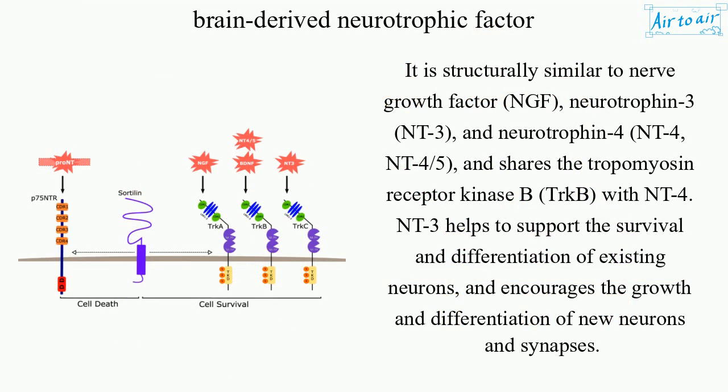It is structurally similar to nerve growth factor (NGF), Neurotrophin-3 (NT3), and Neurotrophin-4 (NT4), and shares the tropomyosin receptor kinase B (TRKB) with NT4. NT3 helps to support the survival and differentiation of existing neurons, and encourages the growth and differentiation of new neurons and synapses.